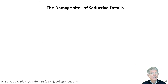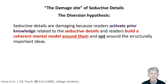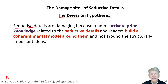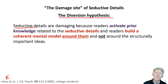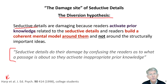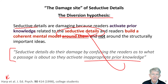What is the damage site of seductive details? The concept here is what's called the Diversion Hypothesis. Author Harp says that seductive details are damaging because readers activate prior knowledge related to the seductive detail, and readers build a coherent mental model around them and not around the structurally important ideas. Seductive details get them to think about things that are not germane to the solution of the problem — that's the concept of diversion. Seductive details do their damage by confusing the reader as to what the passage is about, activating inappropriate prior knowledge.